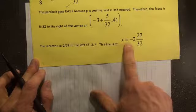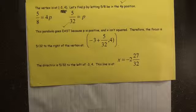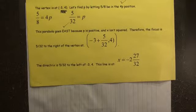It's going to be at X equals negative 2 and 27/32. So good times. And talk to you later.